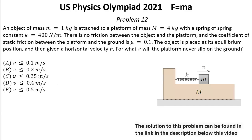Problem number 12. An object of mass m = 1 kg is attached to a platform of mass M = 4 kg with a spring of spring constant k = 400 N/m. There is no friction between the object and the platform.